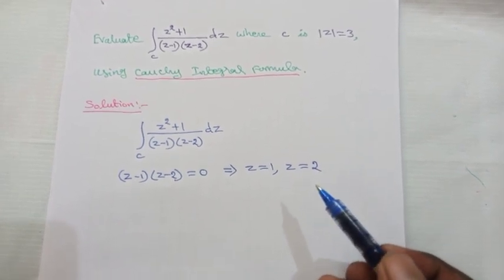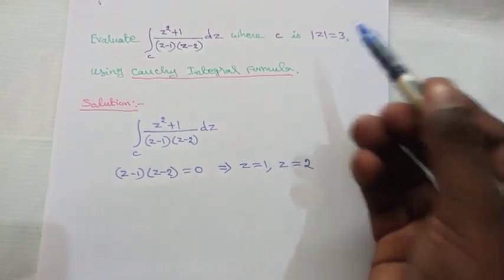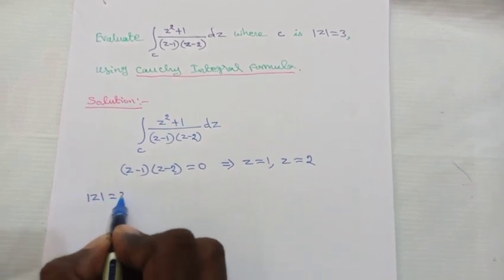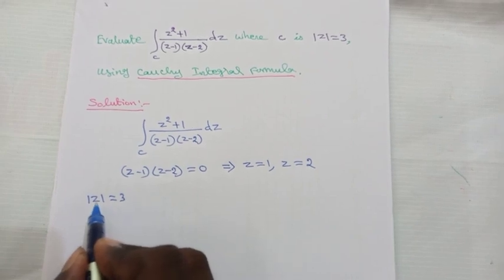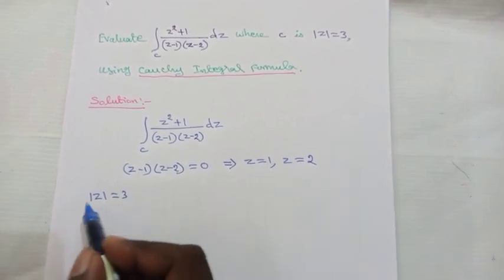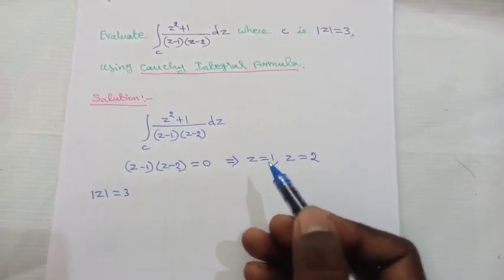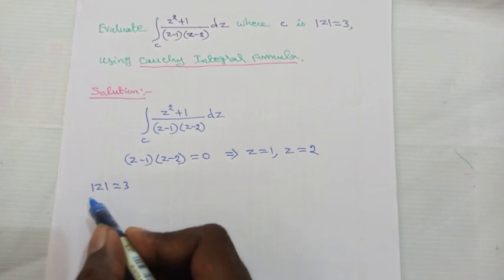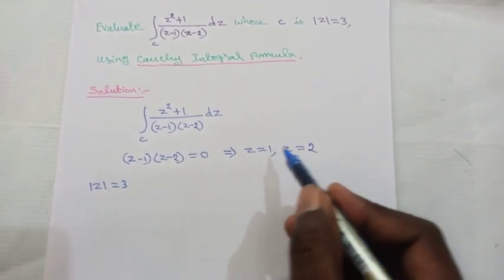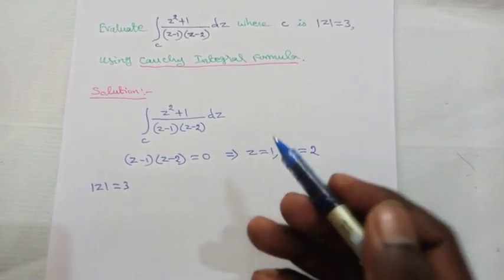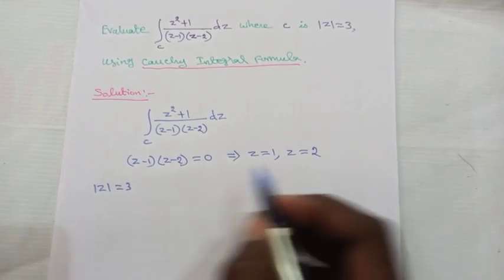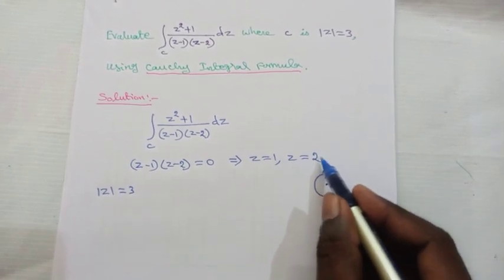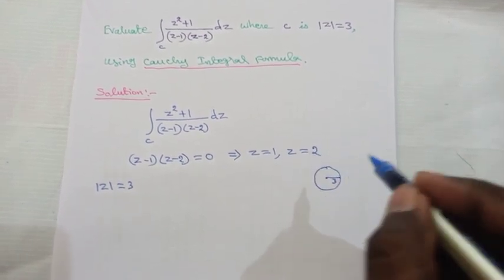So there are two singular points. Next, we verify which lie inside and which lie outside the circle c. The given circle is |z| = 3, so the radius is 3 and the center is the origin. |1| = 1, which is less than the radius, so z = 1 lies inside. |2| = 2, which is also less than the radius, so both singular points lie inside the circle c.